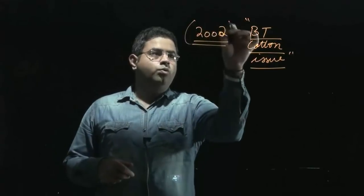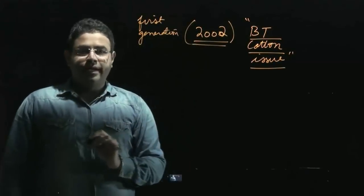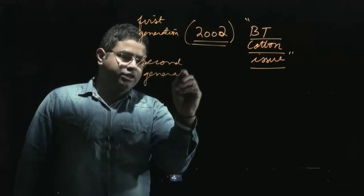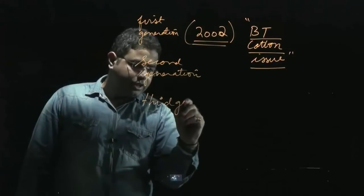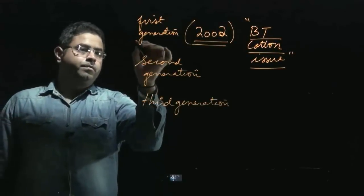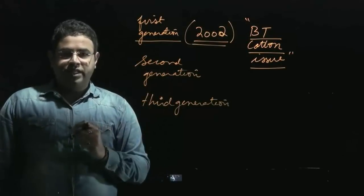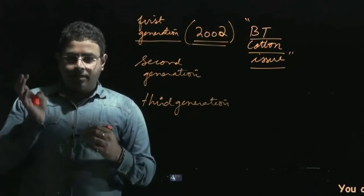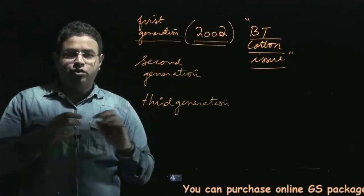In 2002, we introduced the first generation of BT cotton. Later on, the second generation of BT cotton was introduced, and now we are also talking about introducing the third generation. The first generation of BT cotton means you have altered or modified the genes of the cotton seed, and by doing so we get unique qualities in the cotton crop — because of which the insects that infest the cotton crop actually die.